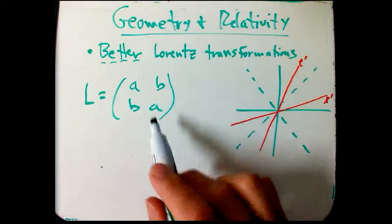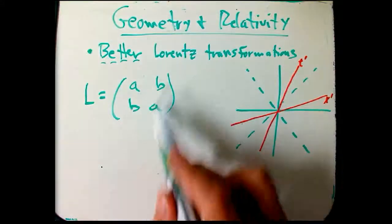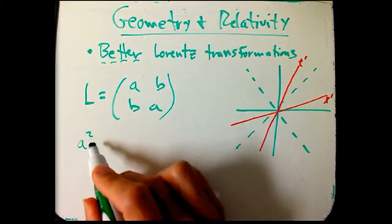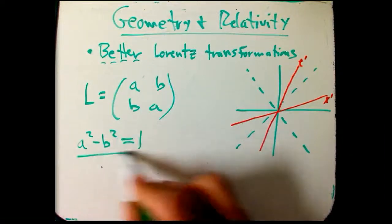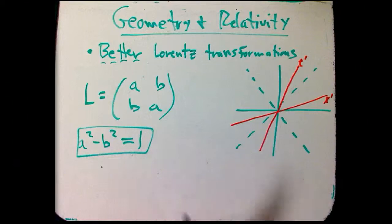We know that the columns and rows are orthogonal, and they're unit vectors. So in particular, a squared minus b squared is equal to 1. And so that's going to be something we're going to use.